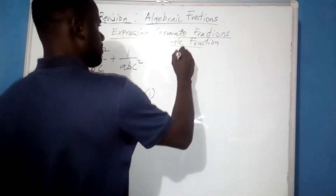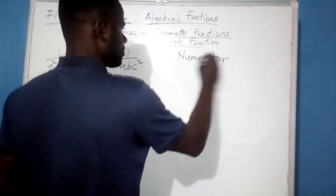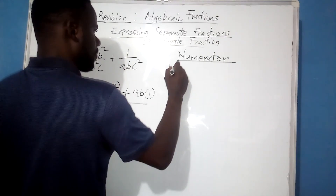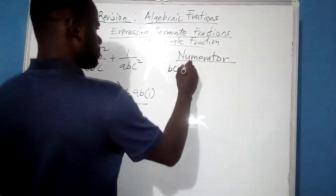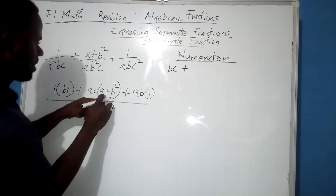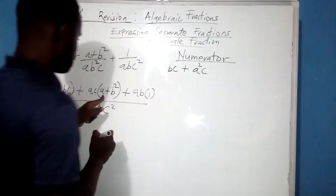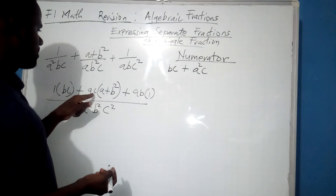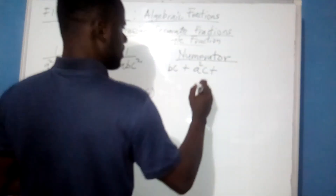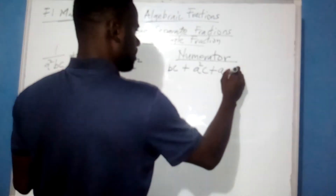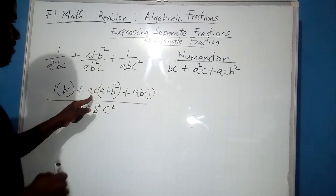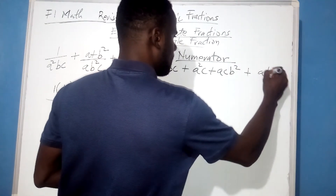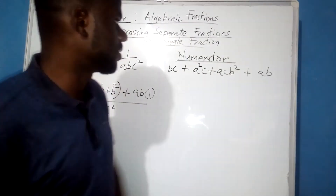Now let's work out the numerator separately. The numerator will simply be 1 times BC, which gives BC, added to: AC times A gives A squared C, and AC times B squared gives ACB squared. Then finally we add AB times 1, which is AB. So this will be the expression for the numerator: BC + A squared C + ACB squared + AB.